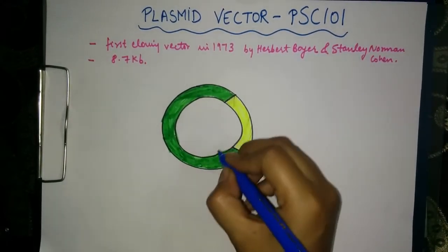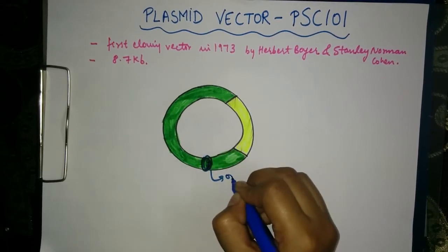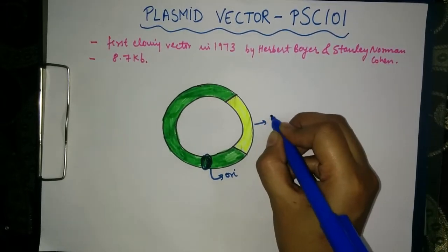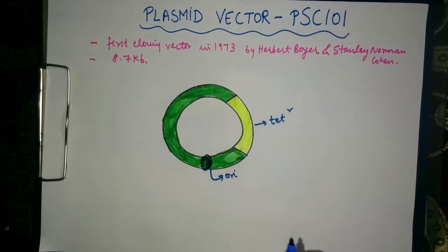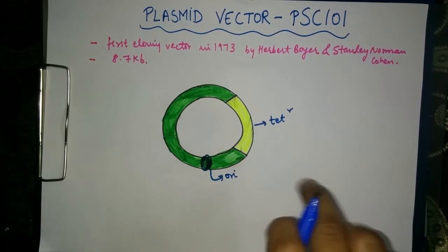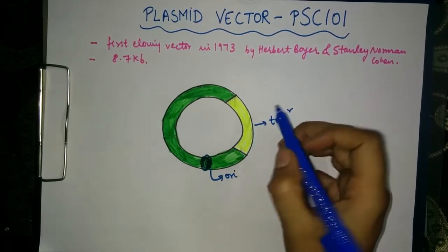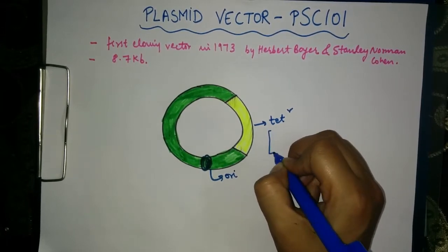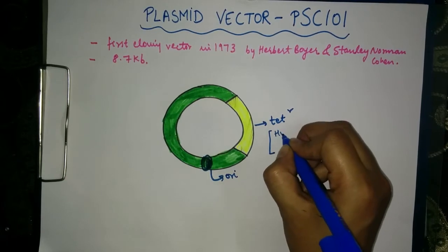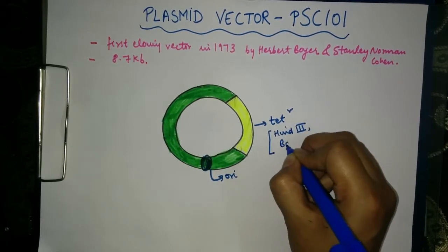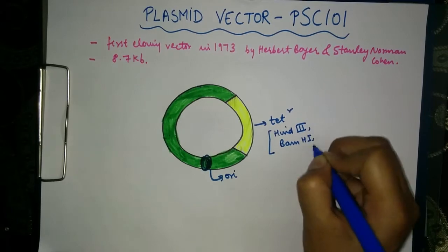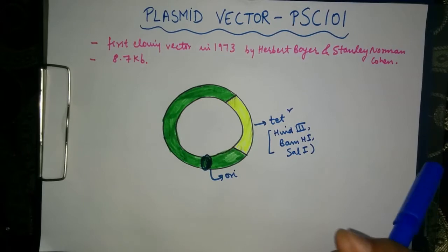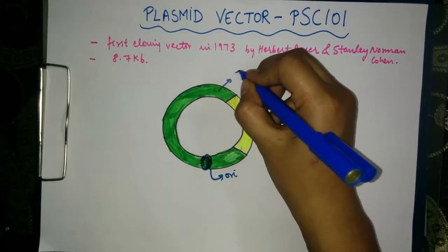This plasmid has an origin of replication and it contains a selectable marker which is the tetracycline resistant gene, which means that this gene is resistant to the antibiotic tetracycline. This tetracycline resistant gene has restriction sites for three restriction enzymes: HIND3, BAMH1, and CEL1. Outside of this tetracycline gene, there is another recognition site for ECO-R1.